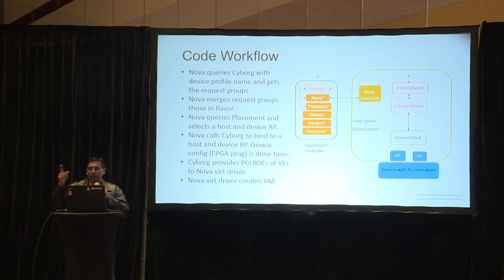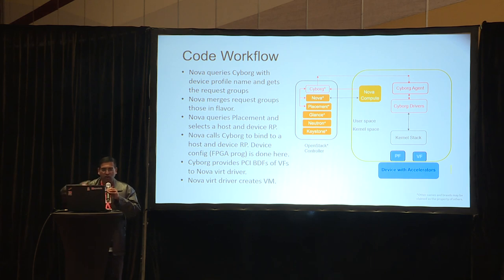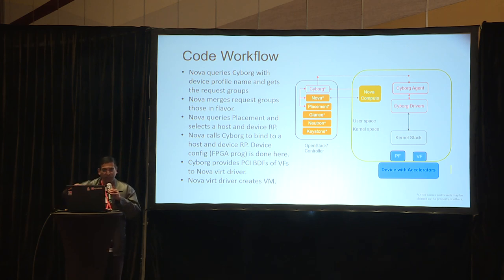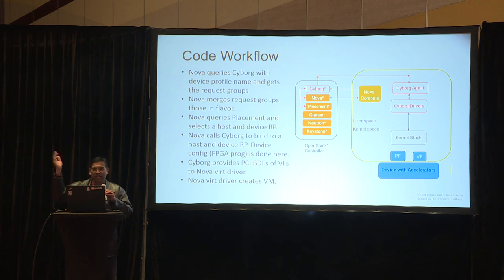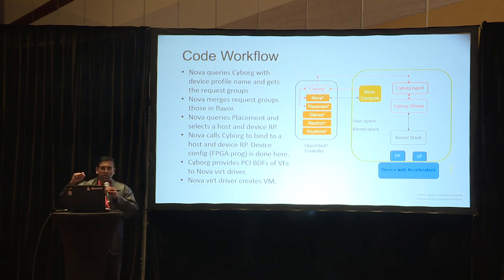Once Nova picks a candidate — essentially a host and a device — it calls back into Cyborg. Similar to port binding in Neutron, we have a concept called accelerator request binding in Cyborg. You bind an accelerator request to a specific host and device. This binding is asynchronous because it may involve preparing or reprogramming the device. Nova issues the bind request and moves on, also calling Neutron and sending messages to the virt driver. The virt driver will finally query Cyborg to get all the PCI device details, rather than getting them from a whitelist.